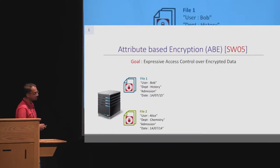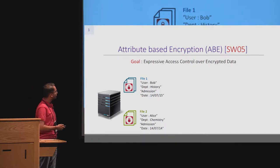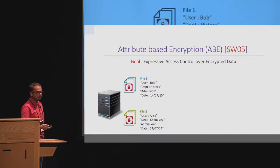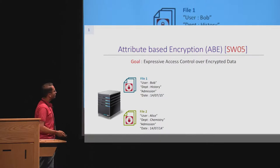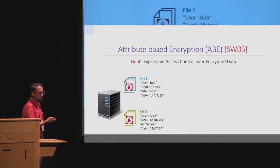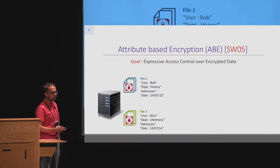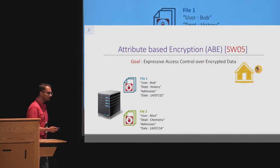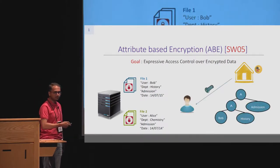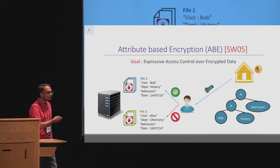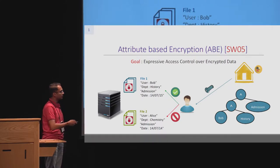Let's start with the notion of attribute-based encryption introduced by Sahai and Waters in 2005, where it's a generalization of public key encryption and the goal is to provide an expressive access control over encrypted data. The setting is that we have a server where we store encrypted files. These files are encrypted with respect to public user attributes, and there should be a key authority which generates restricted secret keys. These restrictions come in terms of policies or Boolean functions embedded inside the secret keys such that these keys can decrypt cipher texts if and only if the attributes satisfy the embedded policies.